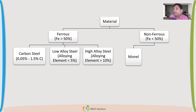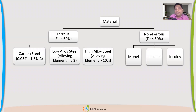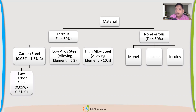In non-ferrous, the three main types used in pressure vessel applications are Monel, Inconel, and Incoloy. These are the most widely used non-ferrous materials in the pressure vessel industry. Remember, we are talking specifically about the pressure vessel industry. Carbon, low alloy, and high alloy are the three categories of ferrous.